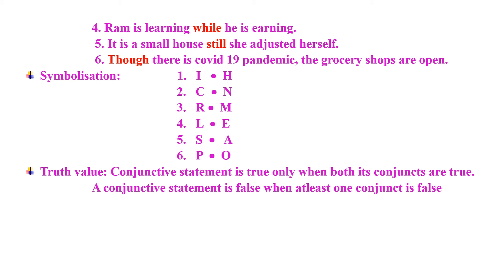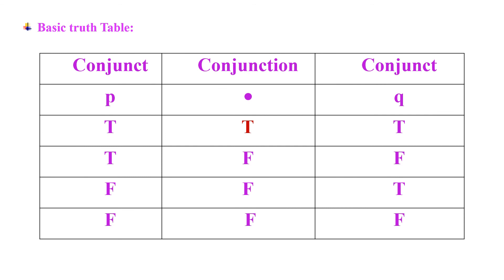Now we come to the truth value of the conjunctive statement. A conjunctive statement is true only under one condition: when both its conjuncts are true. A conjunctive statement is false when at least one of the conjuncts is false — any one side being false is sufficient. Looking at the basic truth table: a conjunctive statement is true only when both conjuncts are true; if the right side is false, the conjunction is false; if the left side is false, the conjunction is false; and when both are false, it is obviously false.